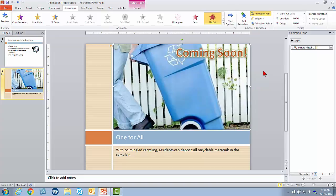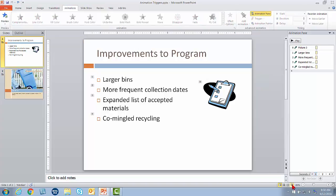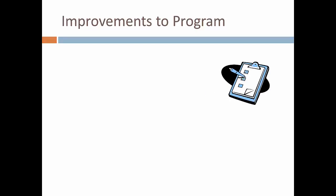The thing about any of these animations is that they will happen whether it's on my click, after, or with the previous animation — there's no way to skip them. They're there and they're going to happen during the show. So see how that picture just came in automatically with a nice zooming effect.